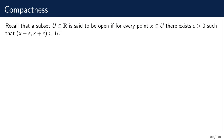We've talked about the generalization of this to metric spaces. In a metric space, a set is said to be open if for every point we can find a ball of positive radius epsilon such that the entire ball is contained in this set. If this happens for every point then this set is open. In particular, open intervals are open sets, as we've discussed in previous lectures.